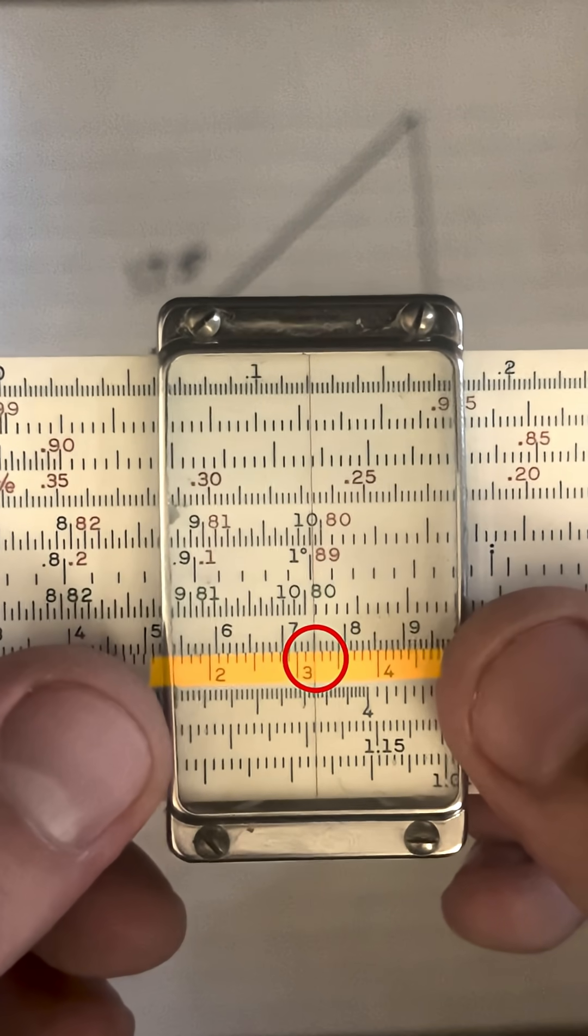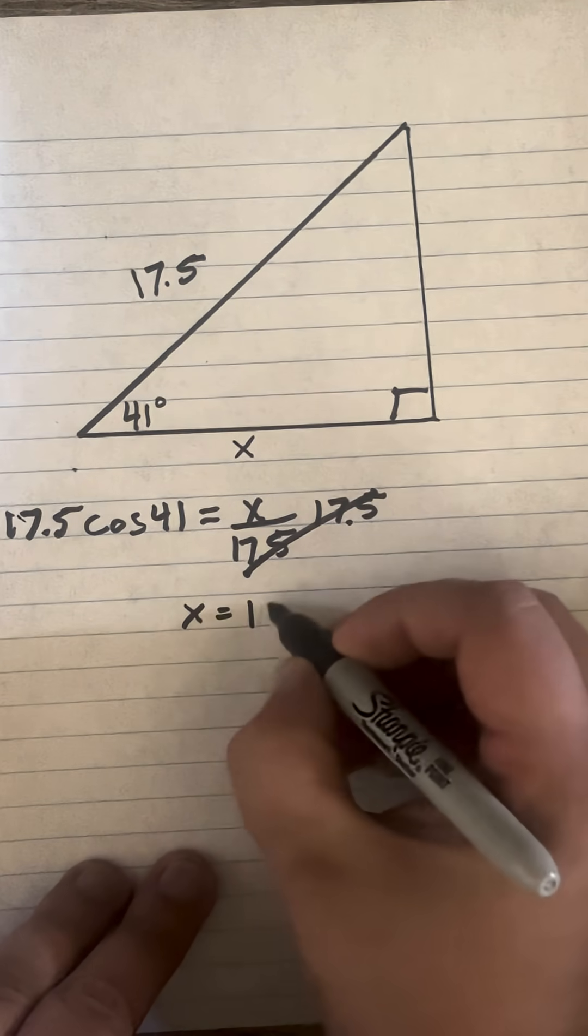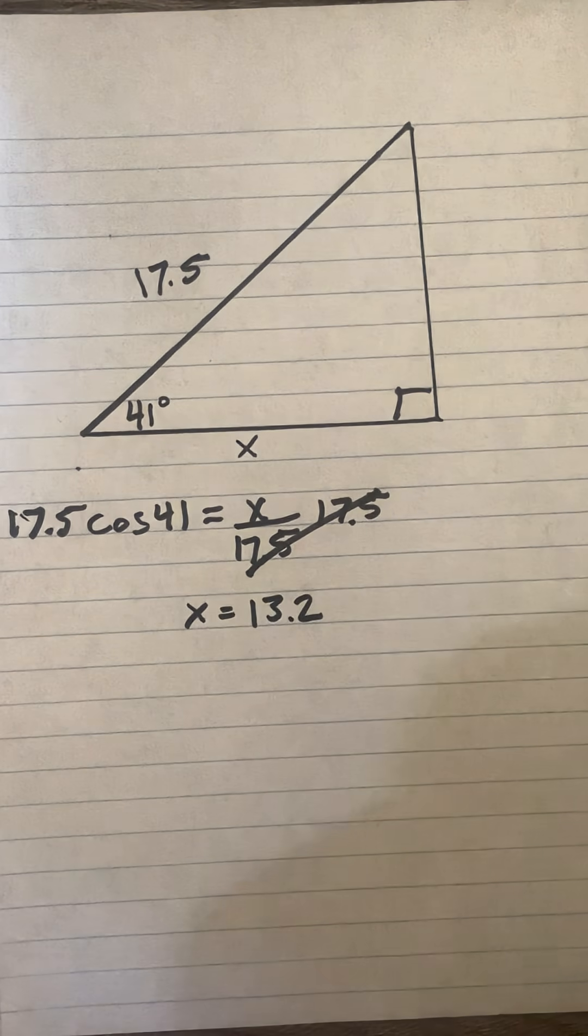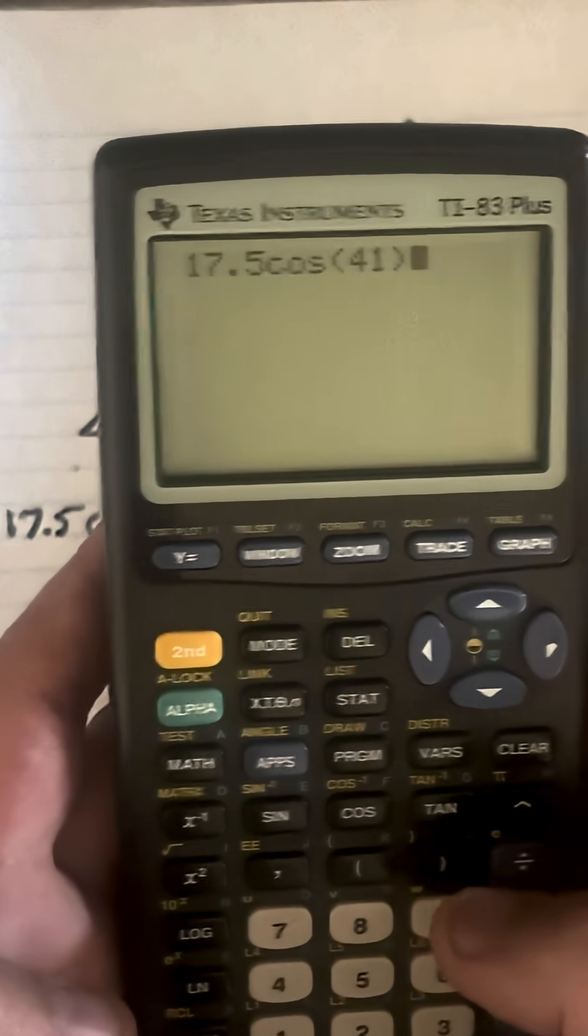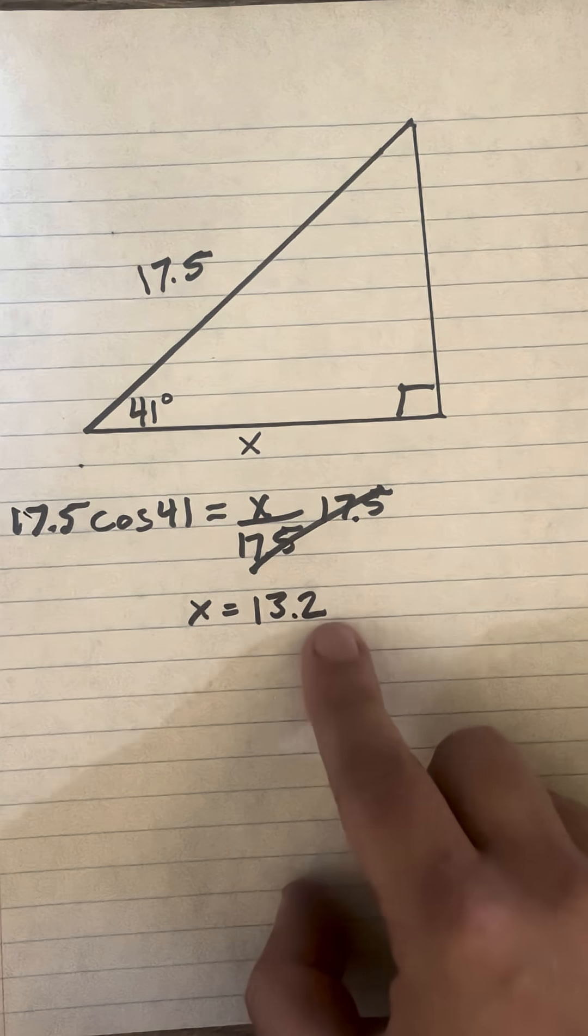Now let's double check that. 17.5 times cosine of 41 equals 13.2, and that matches our answer.